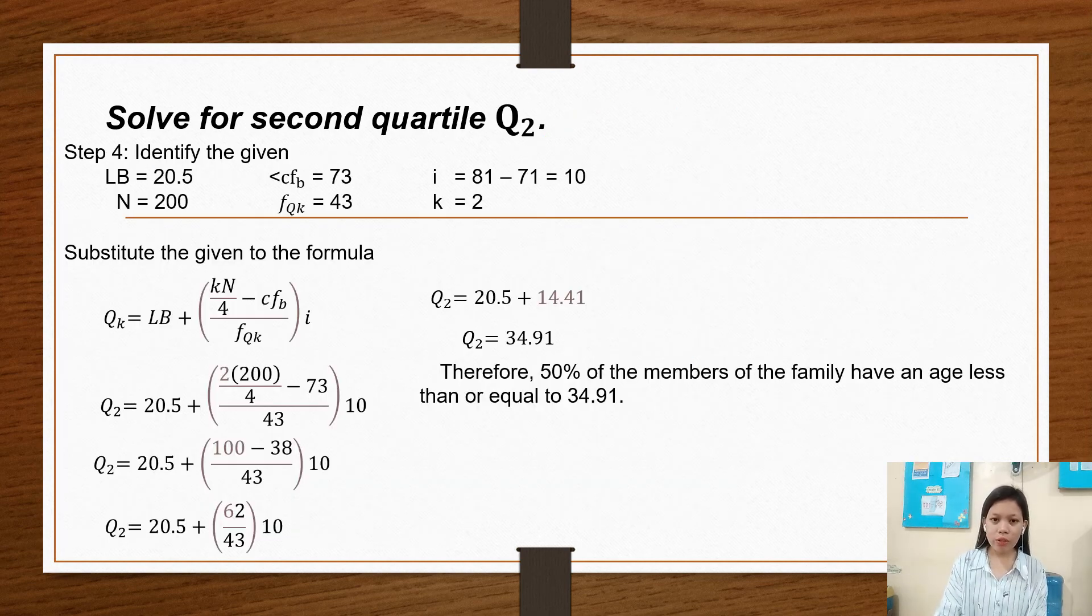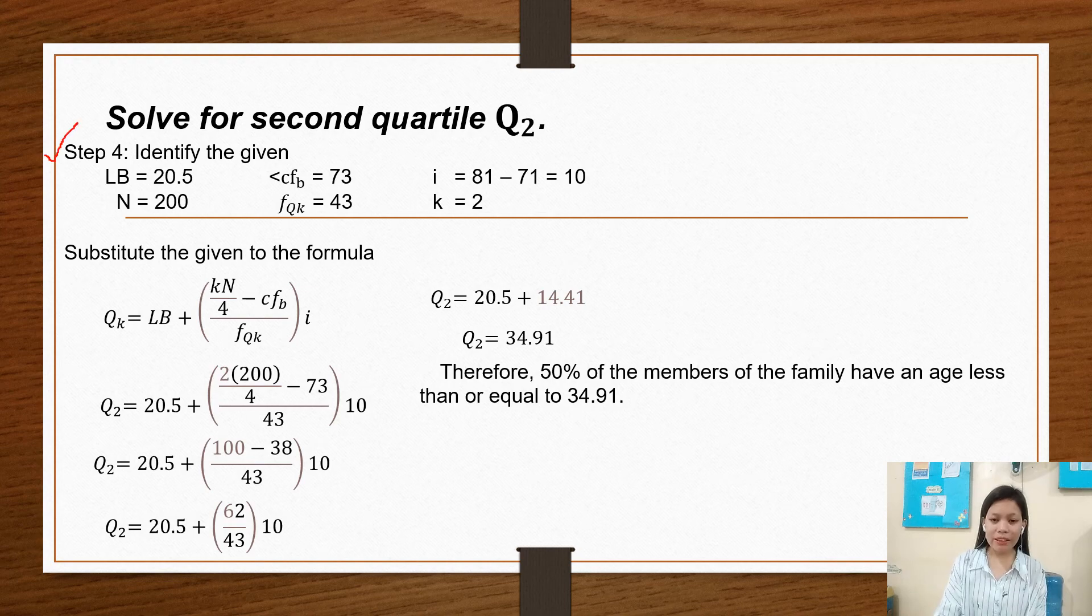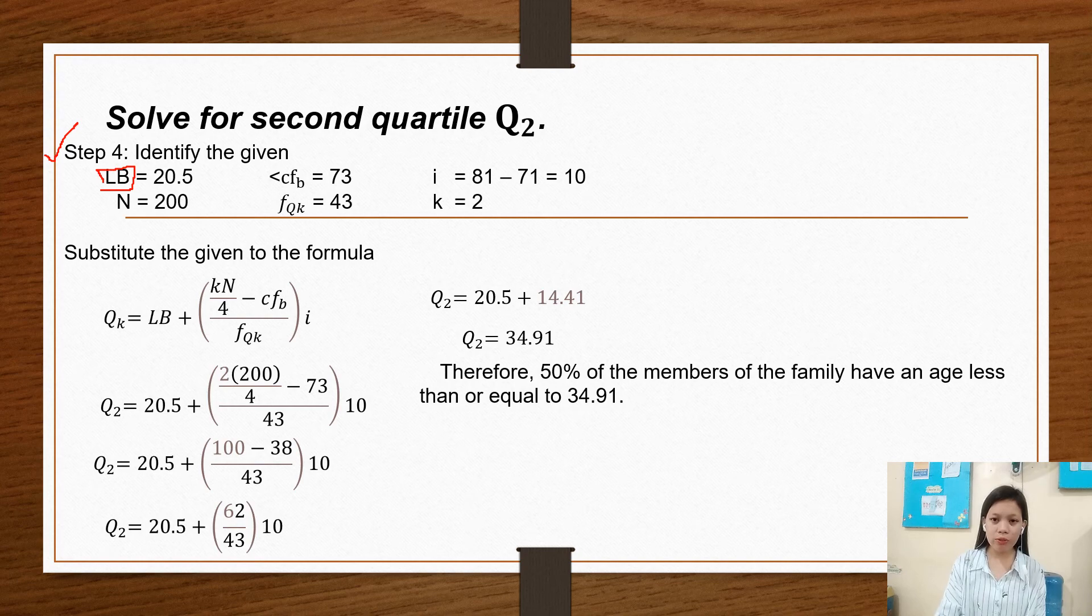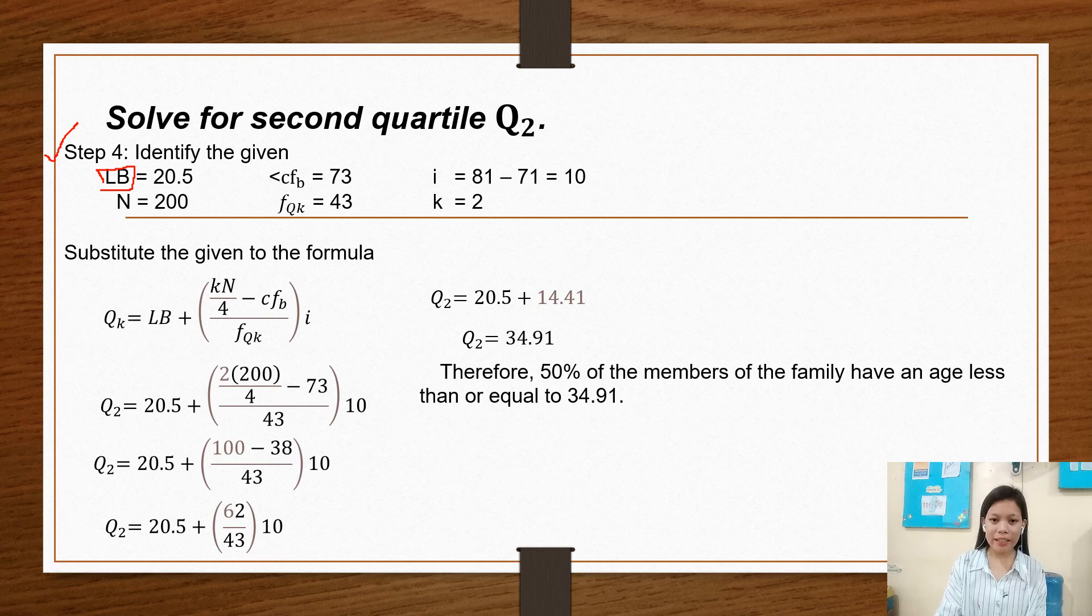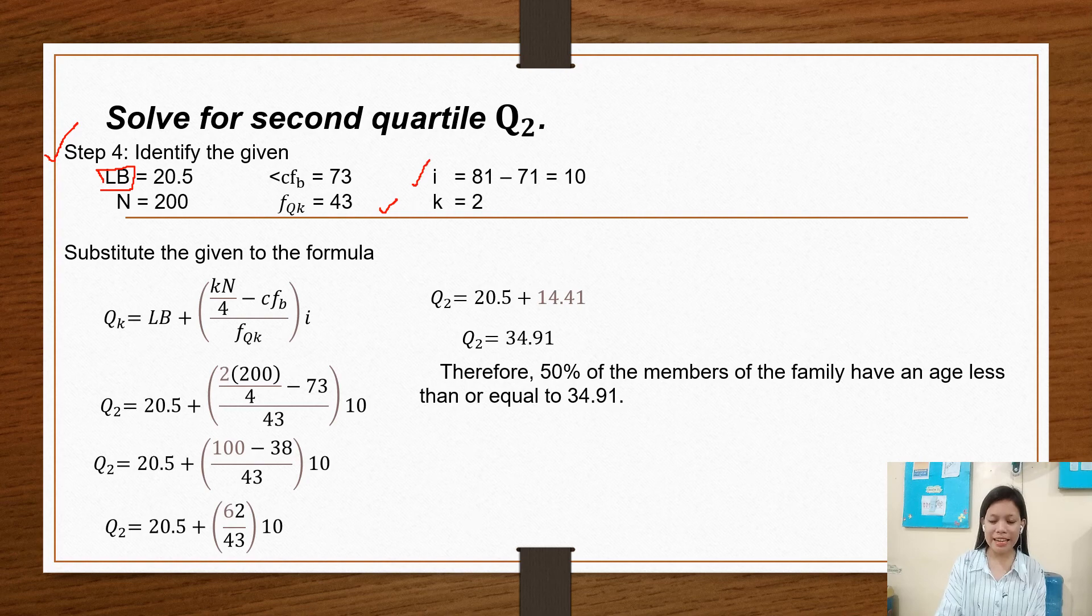So we have here step 4, identify the given. What is the lower boundary? So the lower boundary of Q sub 2 class is 20.5. Our N or the total number of data is 200. Our less than cumulative frequency is 73. Our frequency is 43. Our interval is 10. And our K is 2.